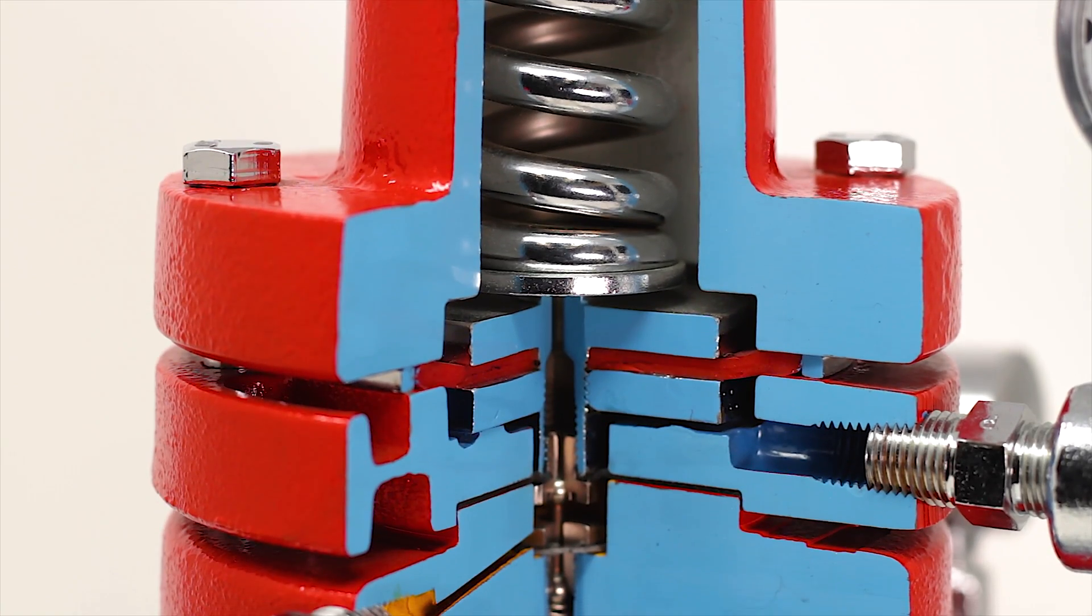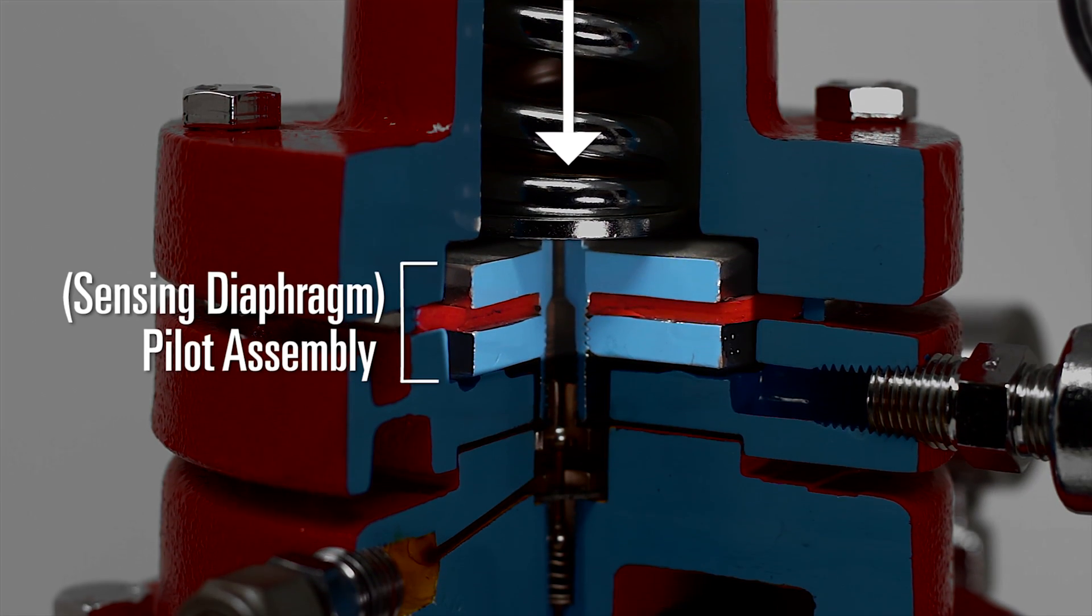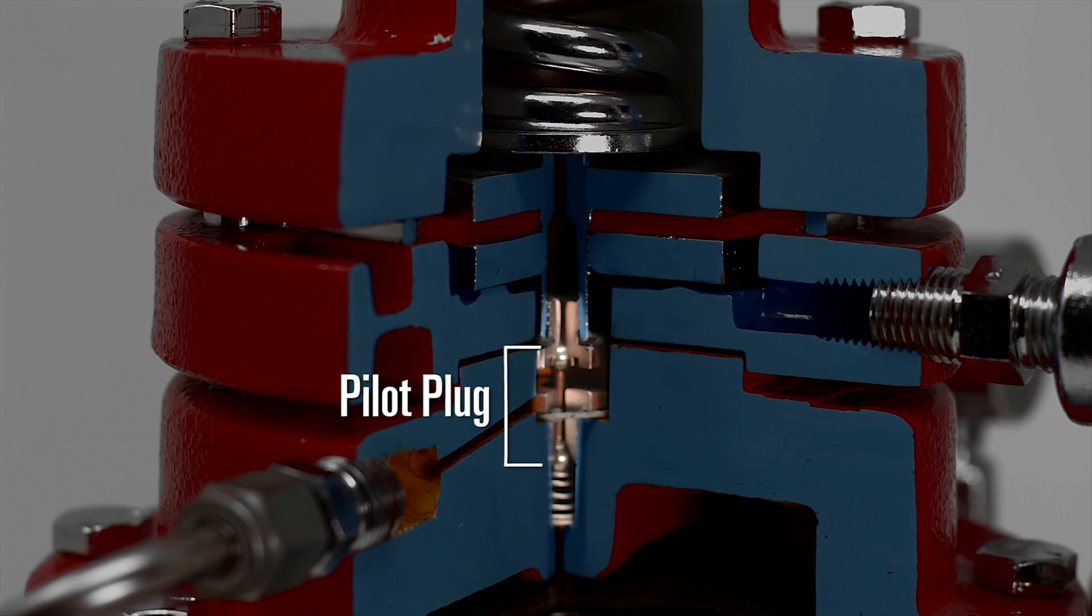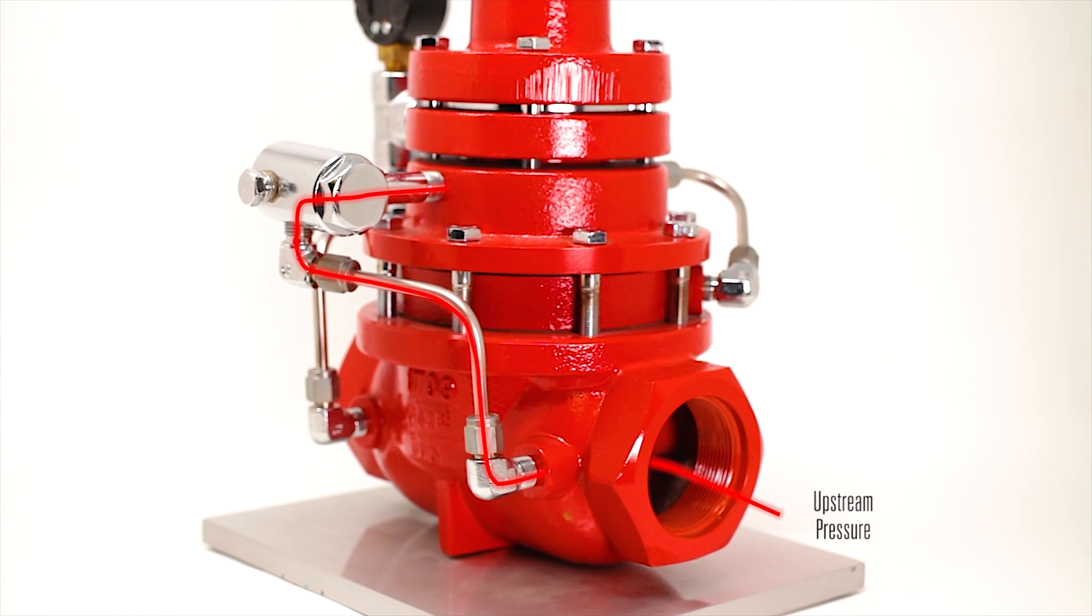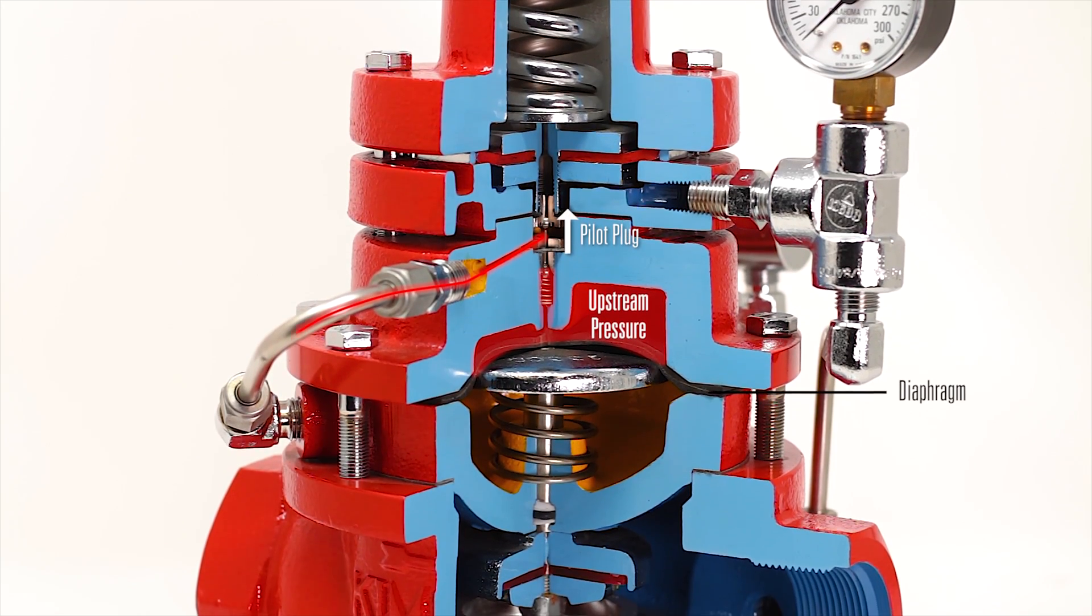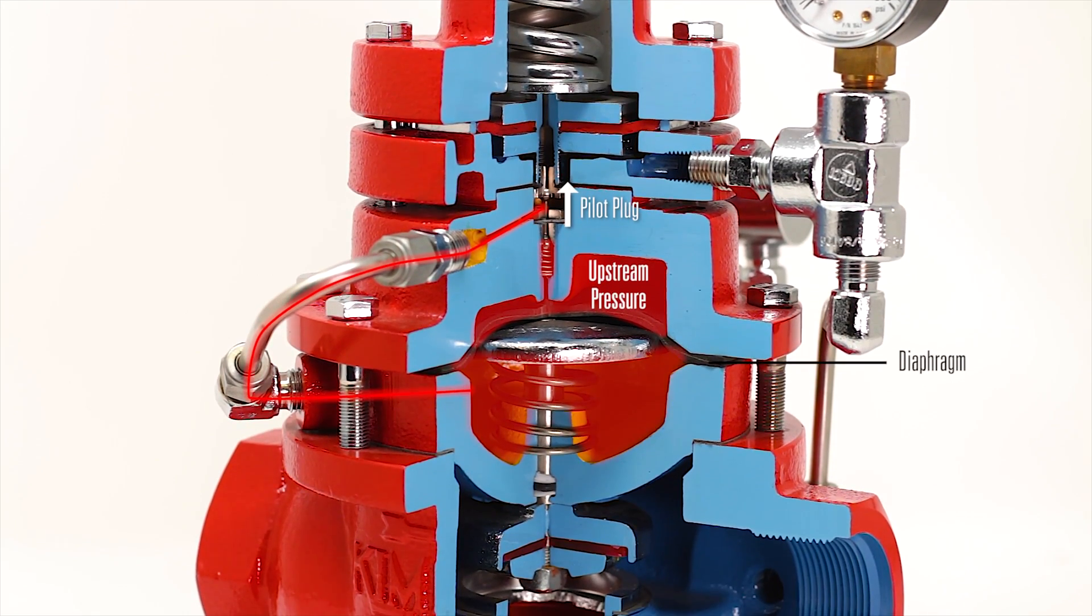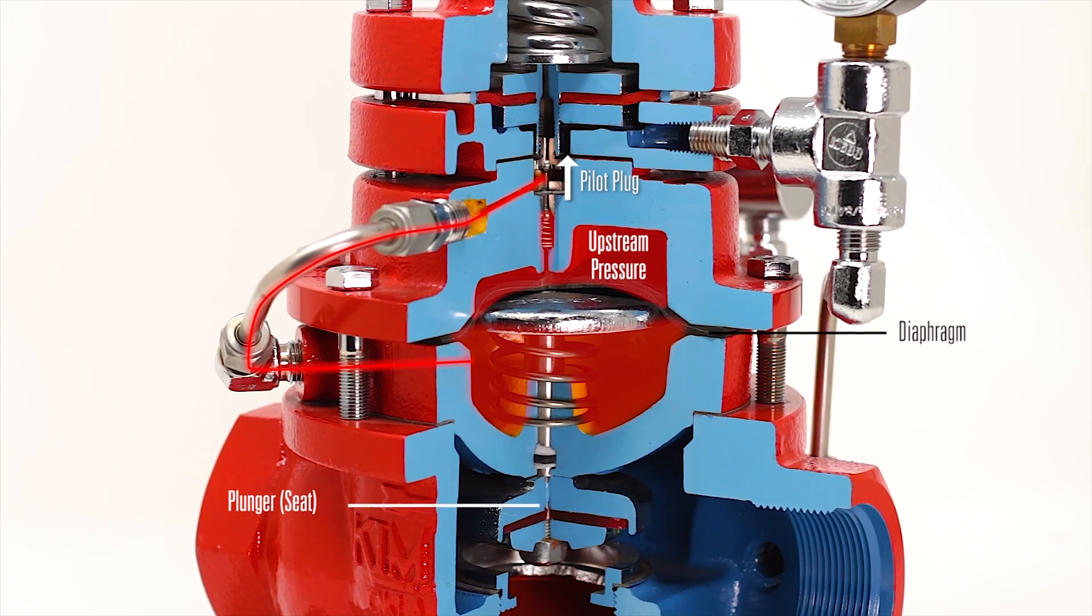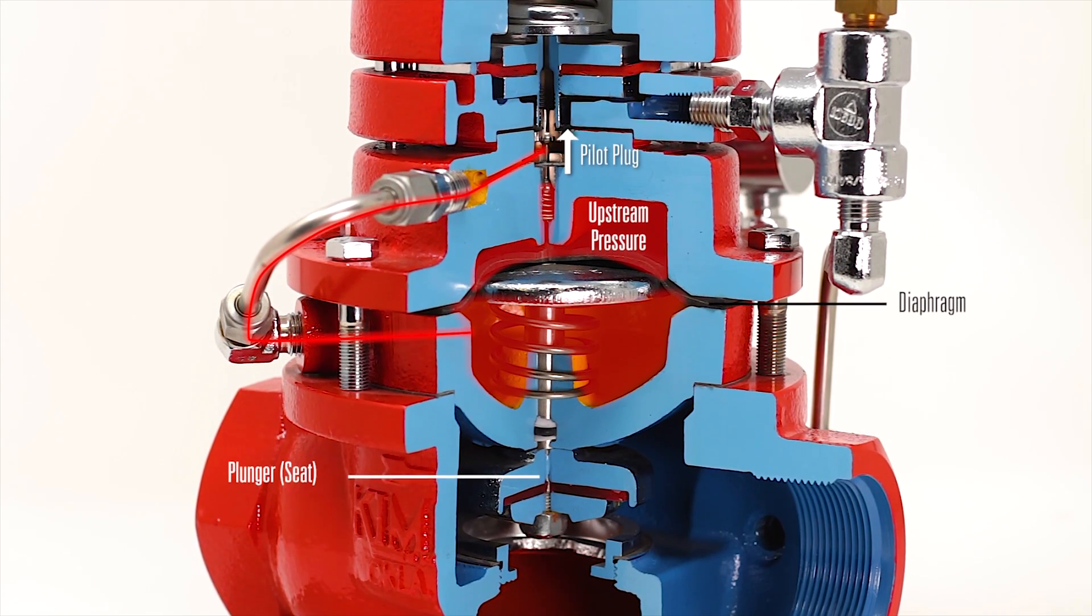The spring pushes down on the sensing diaphragm assembly which positions the pilot plug. The pilot plug then allows gas from upstream to flow under the motor valve diaphragm. The pressure is controlled under this diaphragm to position the plunger to any changes in flowing conditions.